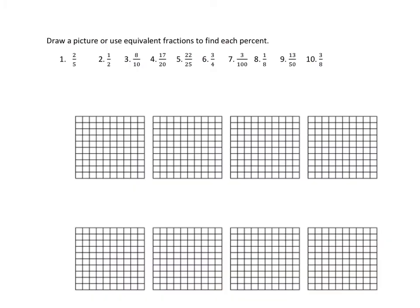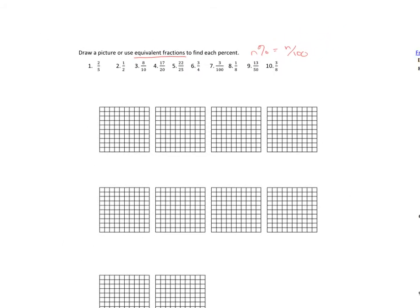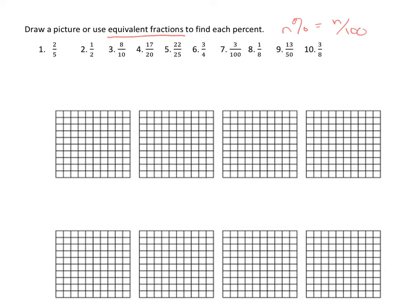When we flip the page, we're going to look at some fractions that we want to write as a percentage. On the last page we were able to write the fraction and convert easily to percents because it was out of 100. One thing we could do is either write the fraction as an equivalent fraction out of 100 — because percent means out of 100 — or we can draw the picture to visualize that. I have 10 grids down here for us to look at.